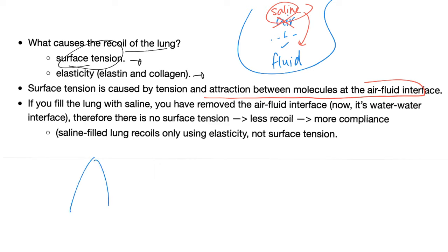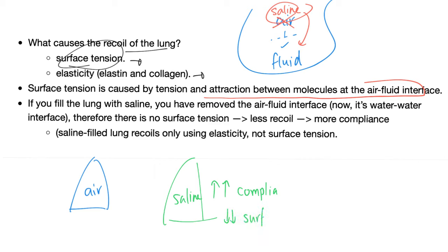So let's say we have one lung filled with air and another filled with saline. Which one has greater compliance? The saline-filled lung, because it has lower surface tension. Surface tension wants your lung to collapse, so if you have less surface tension, by definition you have increased compliance. The air-filled lung has an air-fluid interface and therefore greater surface tension, leading to decreased compliance.